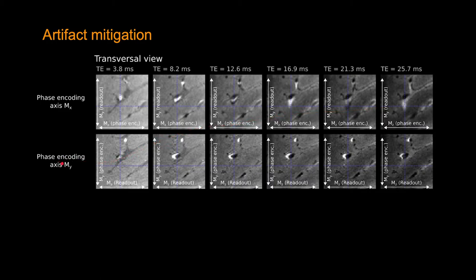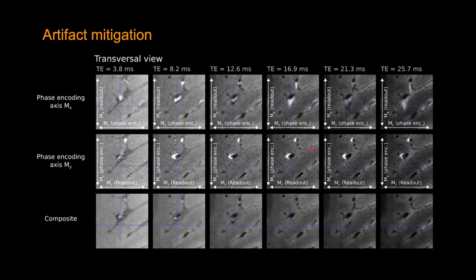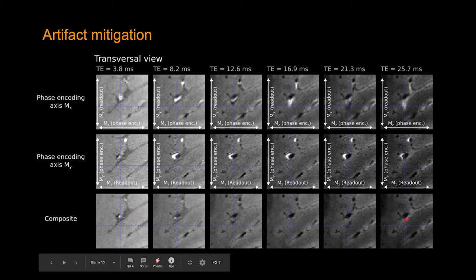If we change the phase encoding axis by 90 degrees, as you can see here, the artery signal is now shifting towards another direction, which was expected. We exploit this fact when averaging these two runs. We call this stage compositing, which is basically averaging the voxels in these two runs. We do something a bit more sophisticated for the voxels that have bright signals in one run and not in the other. By doing this compositing, we can get rid of these bright signals across all echoes.